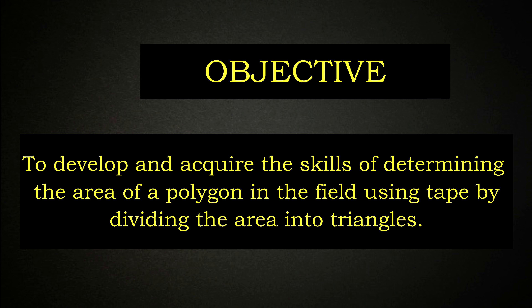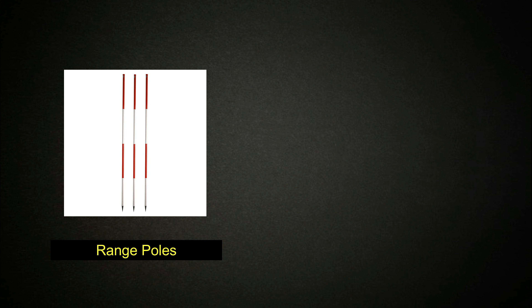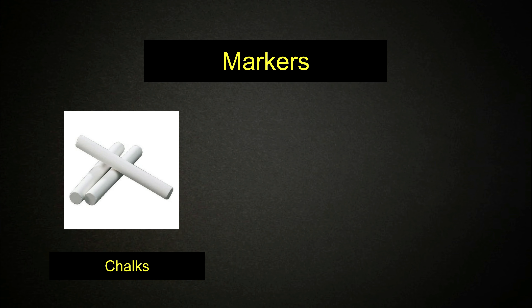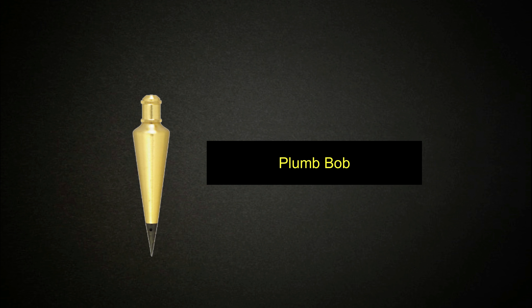The main objective of this fieldwork is to develop and acquire the skills of determining the area of a polygon in the field using tape, by dividing the area into triangles. The instruments and accessories used include range poles, measuring tape, markers — either chalk or marking pins — and plumb bobs.